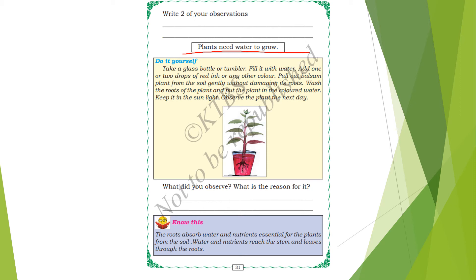Take a glass bottle or tumbler and fill it with water. Add one or two drops of red ink or any other color. Pull out a balsam plant from the soil gently without damaging the roots. Wash the roots of the plant and put the plant in the colored water. Keep it in the sunlight and observe the plant the next day.